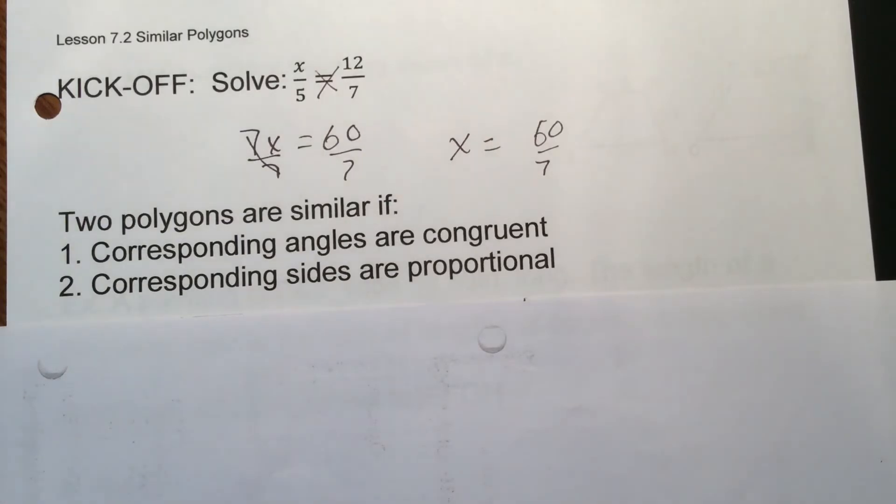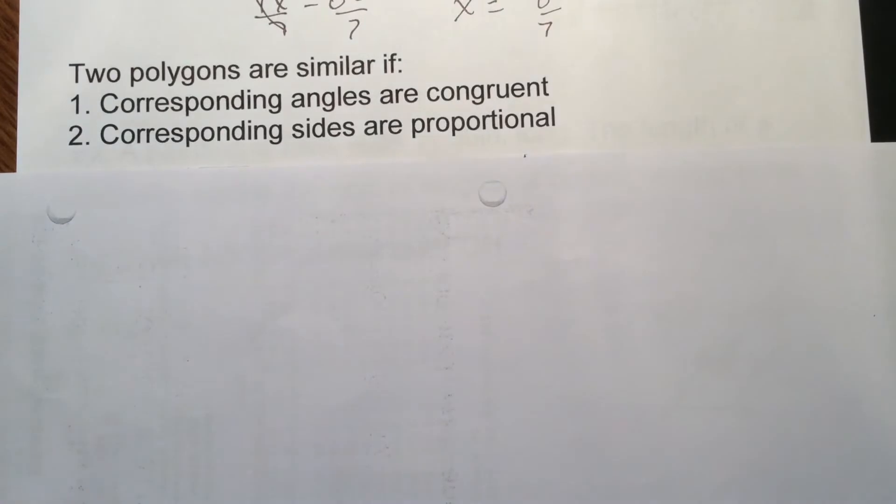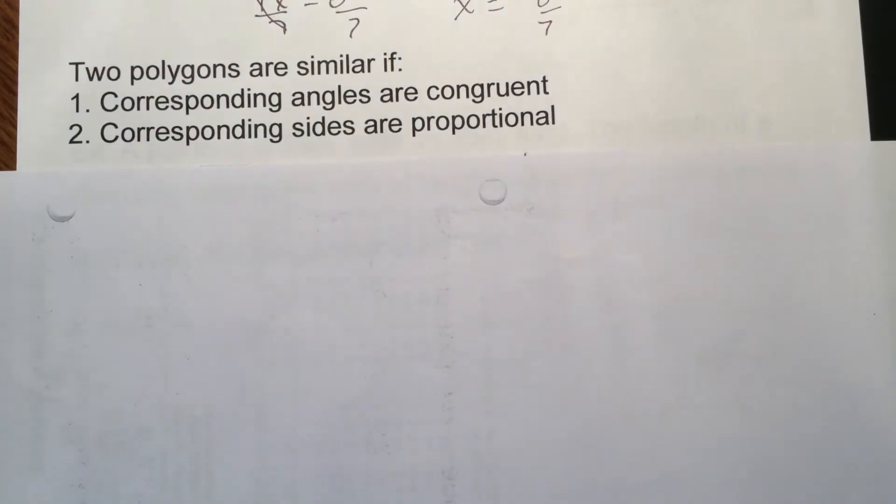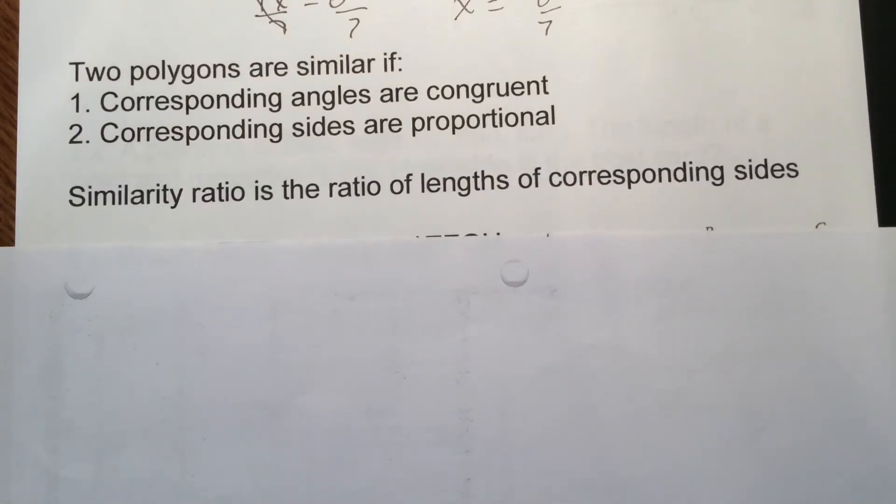But in order for two polygons to be similar, two things have to happen. One, corresponding angles have to be congruent. That also means that corresponding sides are proportional. So they're going to be the same proportion how the sides will match up, but all the angles have to be congruent that match up. So to get that proportional corresponding sides, we're going to find that similarity ratio of the lengths of those sides.